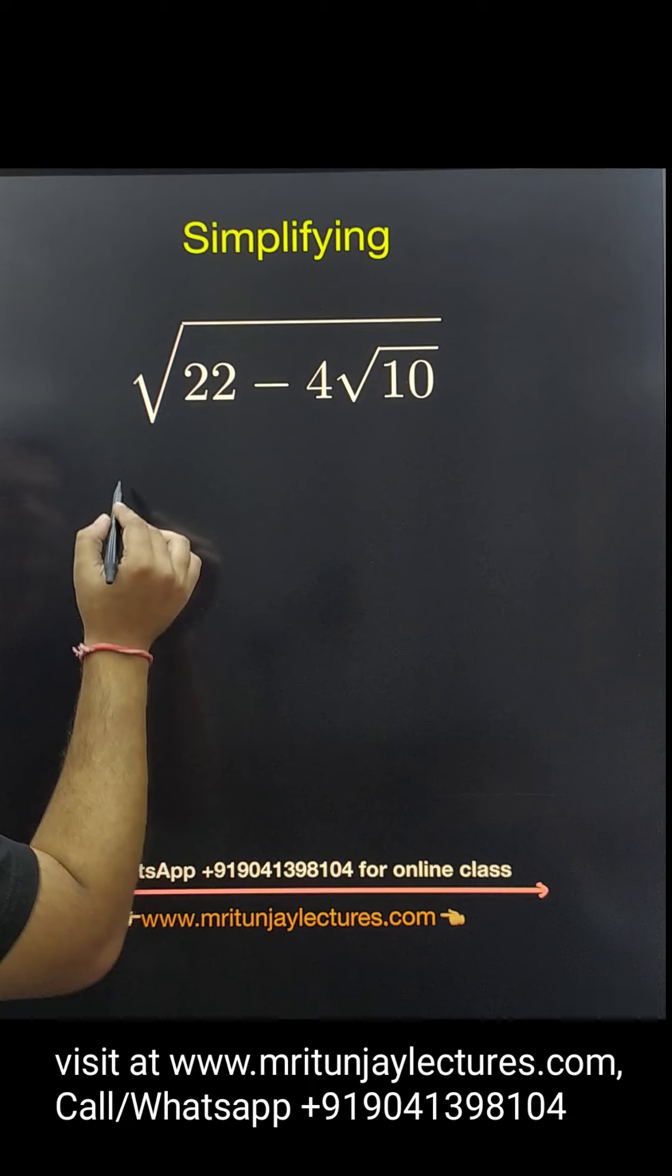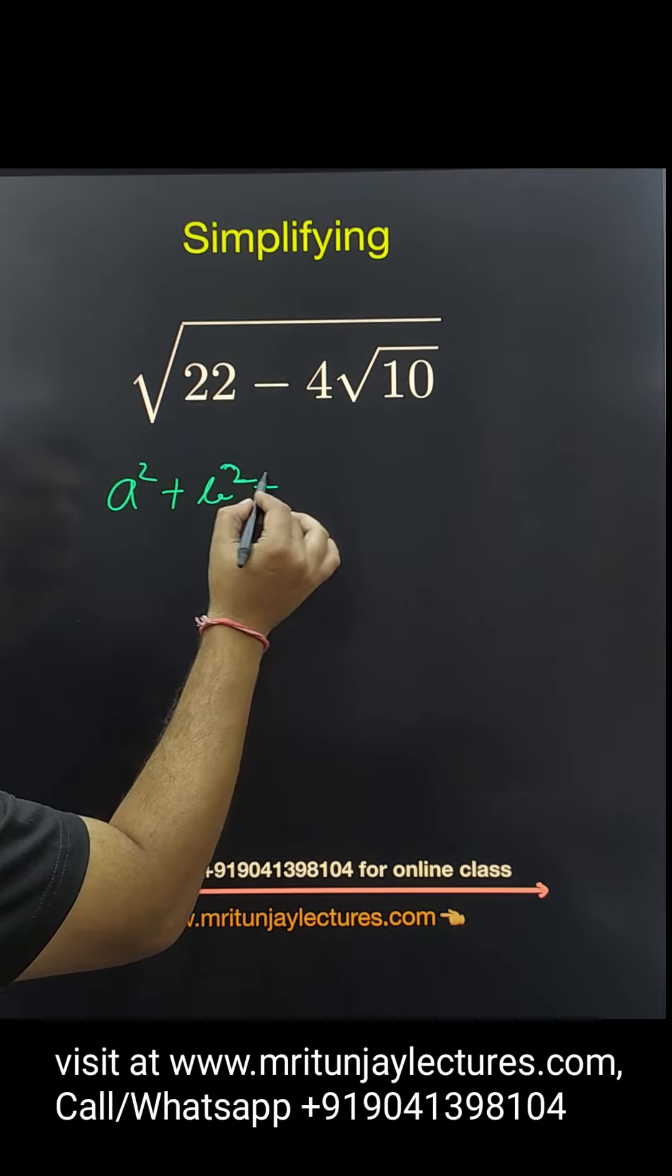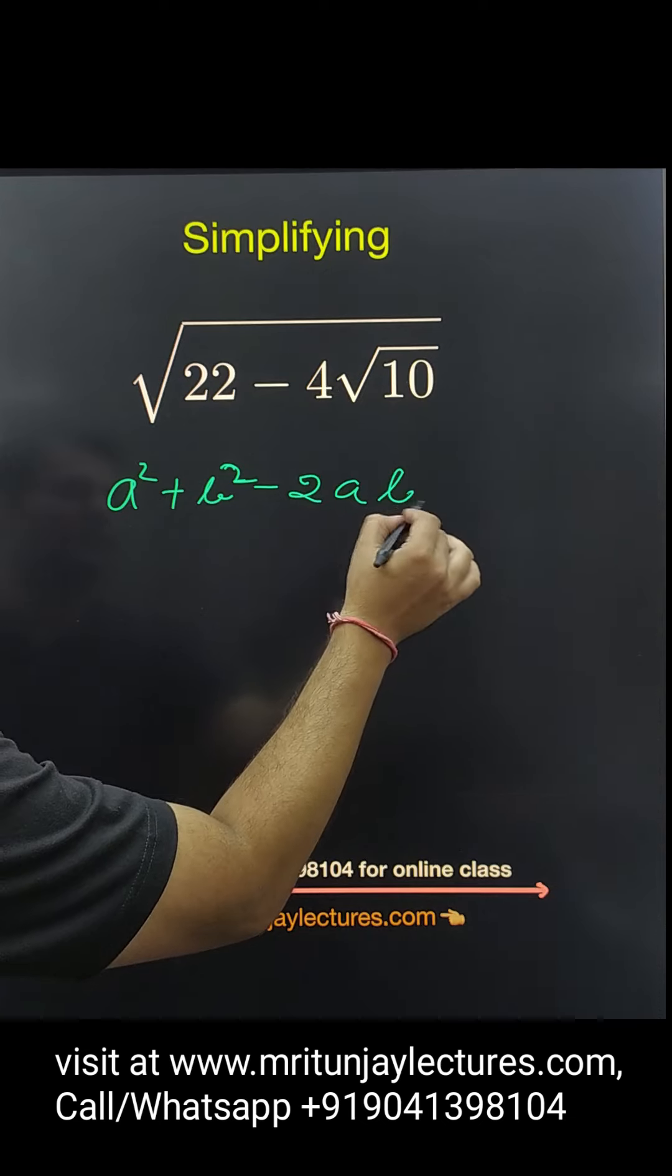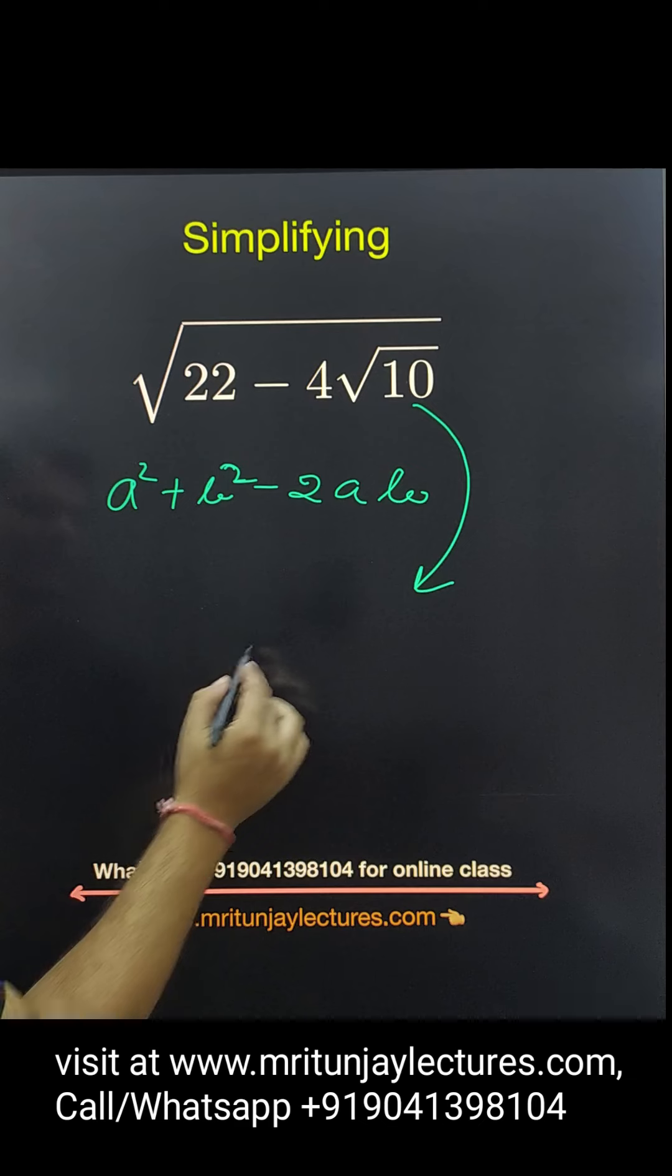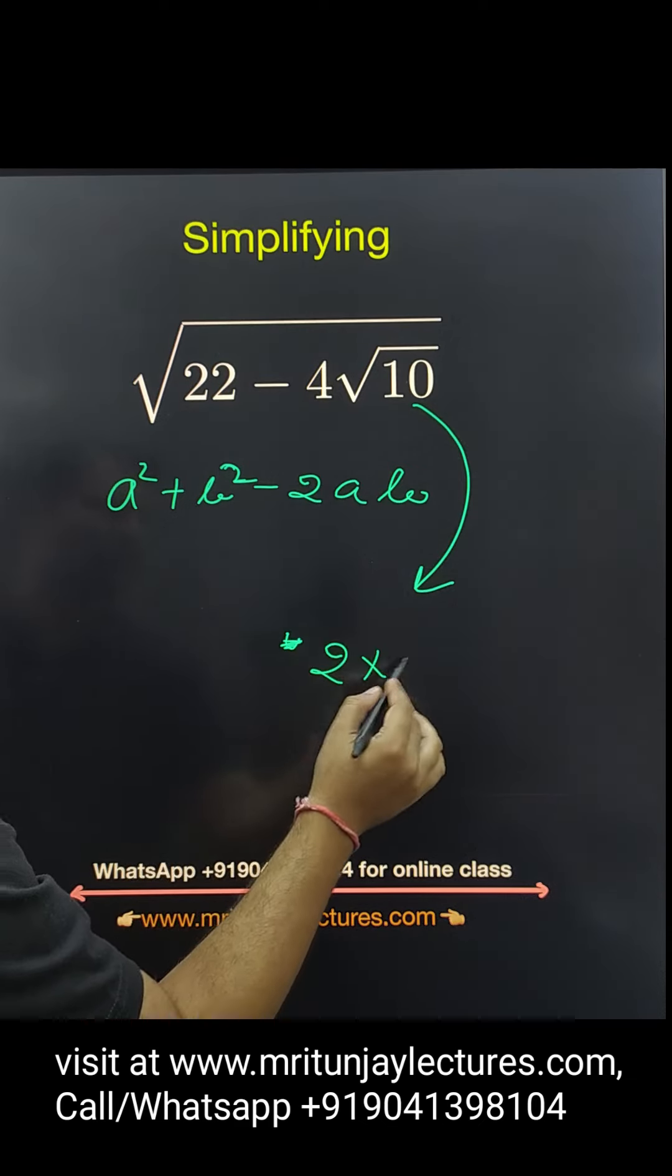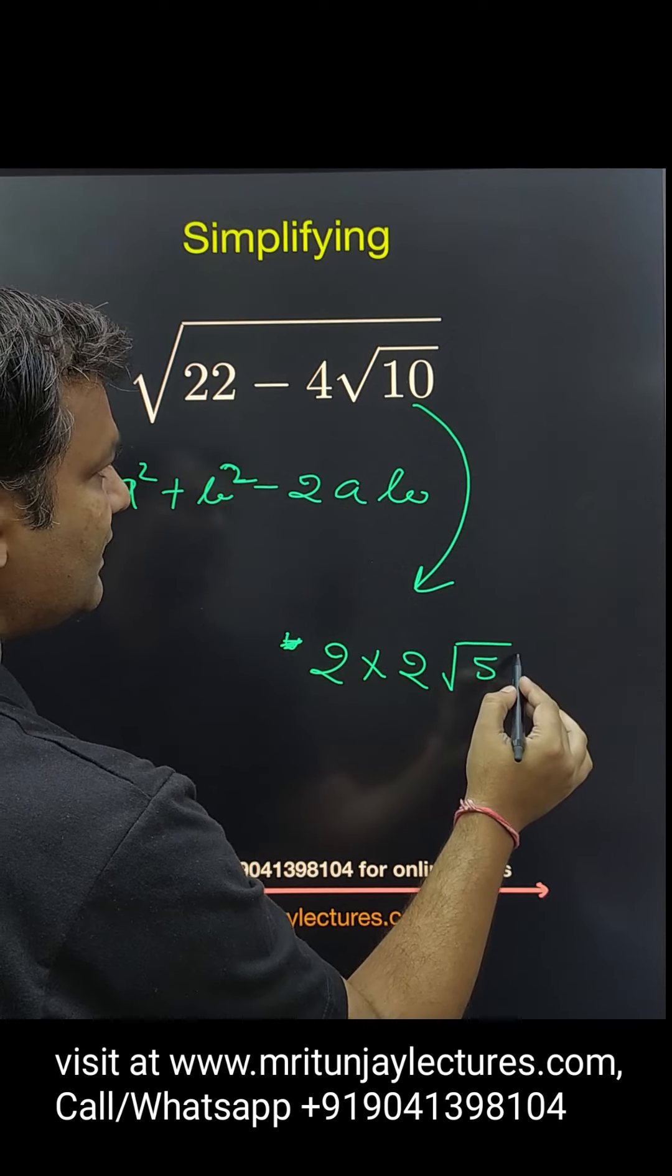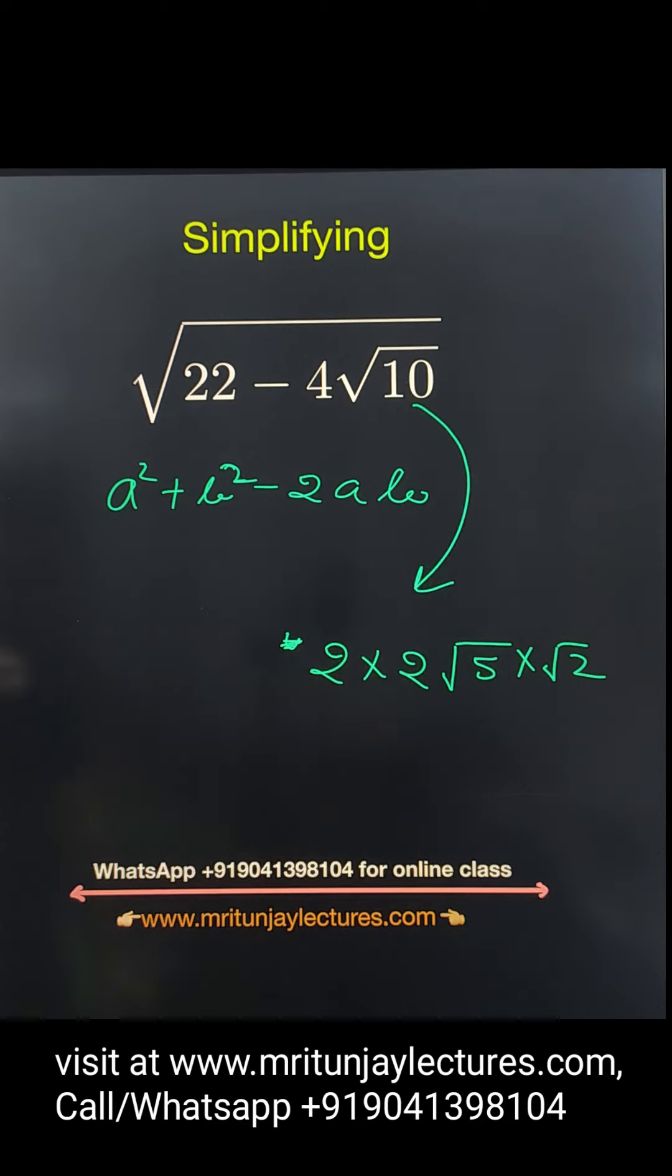...like a square plus b square minus 2ab. OK, look if you see here 4 means that 2 into 2 into square root 5 into square root 2. OK, square root 10 is written like that one.